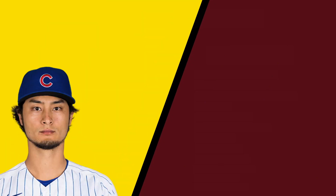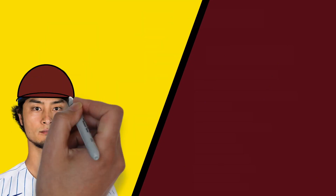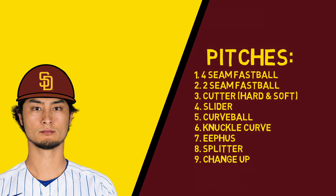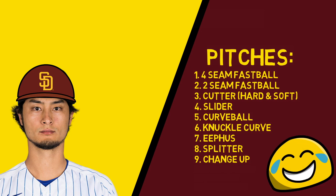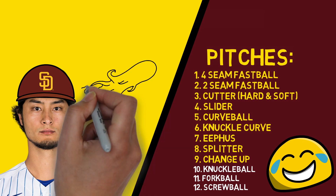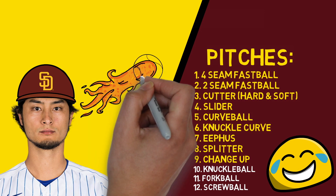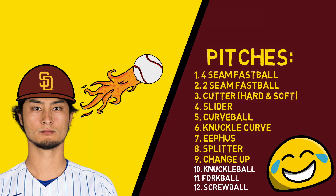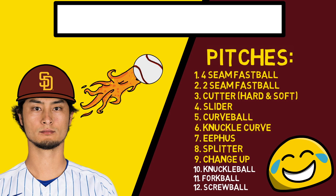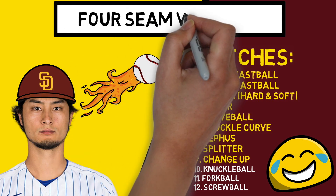Former Cub Yu Darvish throws so many pitches, it's almost comical at this point. If he were to add 2 or 3 more, I don't think there would be any new pitches left for him to learn. Today, we're going to be focusing on a few of those pitches, specifically talking about what the difference is between 4-seam and 2-seam fastballs.